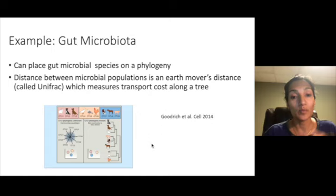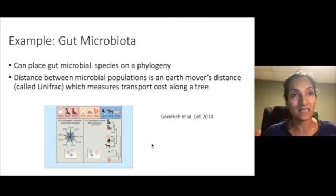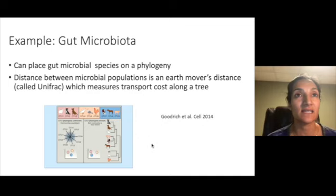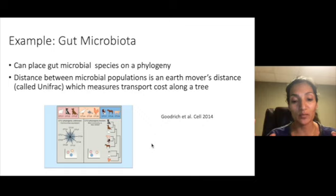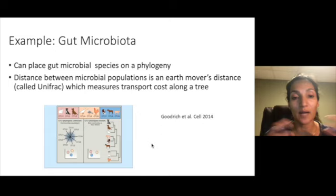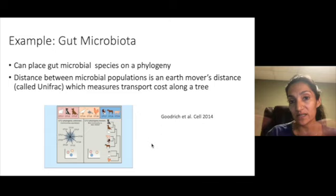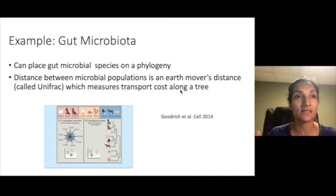In other examples, it might be easier to compute distances than to understand the native space where the data lives in. An example of this is in the gut microbiota field. Here the microbiome or the bacterial population within organs like guts of organisms are measured and sequenced. So once they're sequenced, we can figure out which species of bacteria are in a particular gut and how much of each species there is. But in order to find out how different two organisms are, there's a very complicated earth-movers distance that's measured called unifrac which is transport cost along a phylogenetic tree.